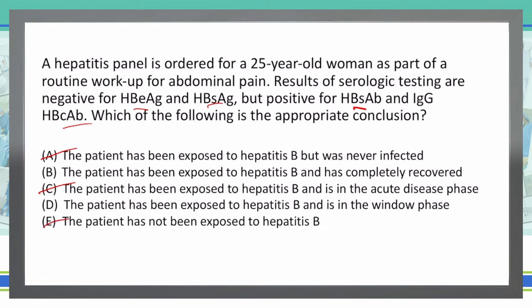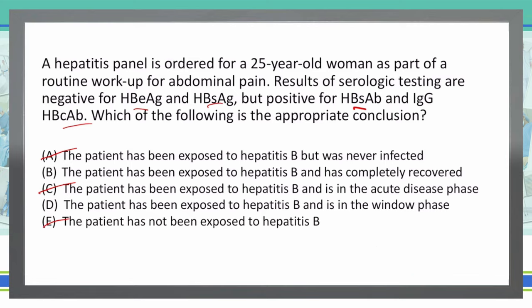So are we in the window phase or the completely recovered phase? This is where we need to determine between the IgG core antibody and the IgM core antibody. The IgM core antibody comes up first and disappears, while the IgG comes up later. IgM would be present in the window period, whereas IgG would be present in the recovered phase. We have IgG here, so we are in the completely recovered phase — not D — meaning B is my final answer.